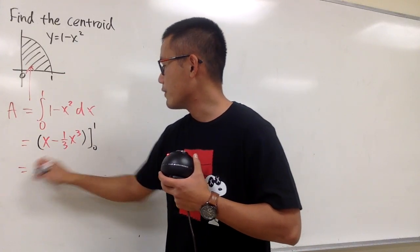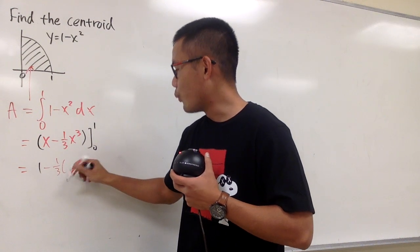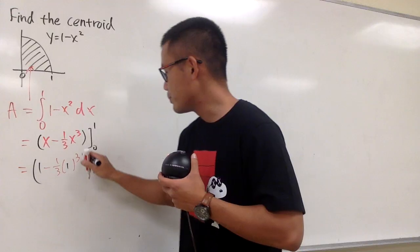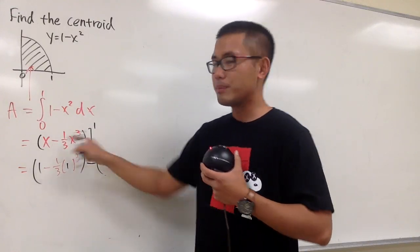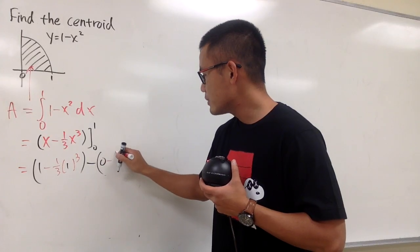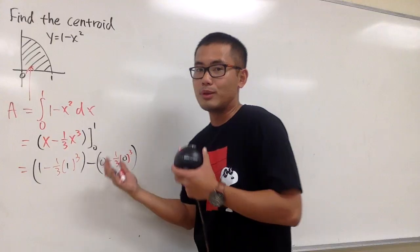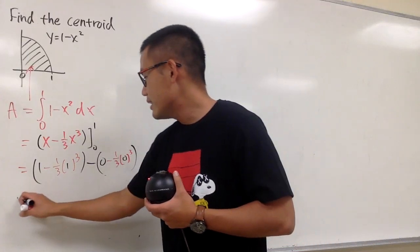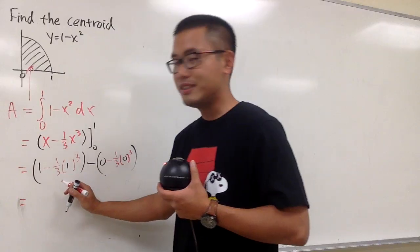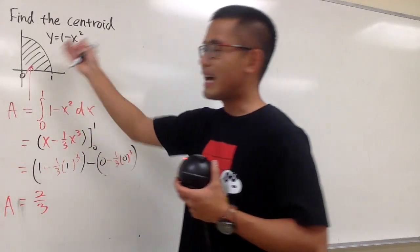So plug in 0, plug in 1 — plug in 1 first, of course. Plug in 1, we get 1 minus 1 third times 1 to the third power. And then minus: plug in 0, you get 0 minus 1 third times 0 to the third power. This is just 1, and this is just 1 third. 1 minus 1 third gives you 2 thirds, and that will be the area.